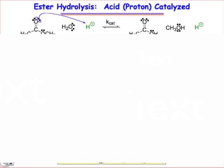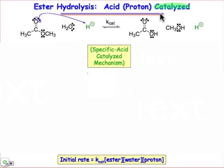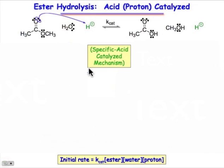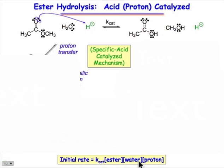Now let's look at the catalyzed form. This is proton catalyzed, so a proton appears on both sides of the balanced equation — it doesn't contribute to the stoichiometry. We call this a specific acid catalyzed mechanism. Let's see how the proton enters into the rate determining step — that's the bottom line, and what we want to demonstrate: how this term enters into the rate law.